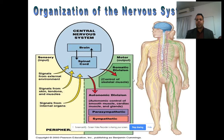The organization of the nervous system shows that the brain and spinal cord form the central nervous system. The peripheral nervous system comprises sensory neurons and motor neurons, and then there are the parasympathetic and sympathetic divisions, which are the divisions of the autonomic nervous system.